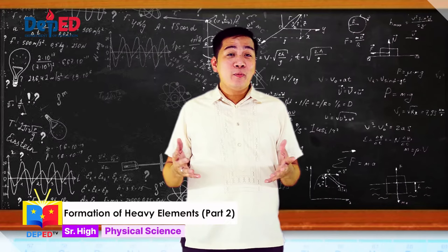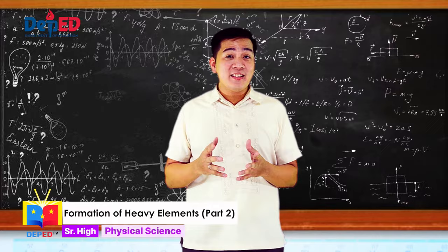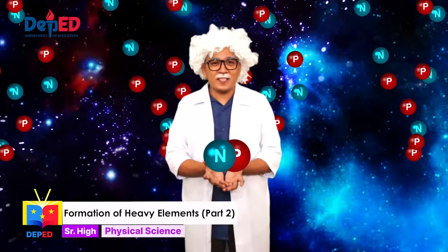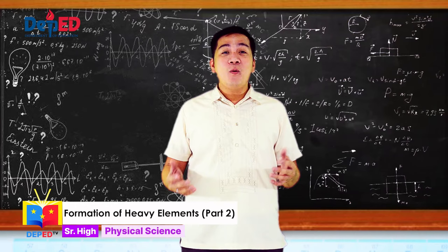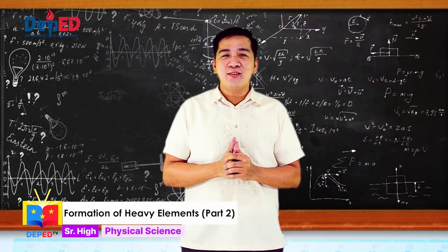In our previous episode, we learned how the light elements were made during the Big Bang Nucleosynthesis and how hydrogen atoms fuse to form helium inside the stars. In this episode, we will discover how heavier elements are formed inside the stars. And let's watch this documentary about the stars and learn more about what goes on inside these hot balls of plasma.